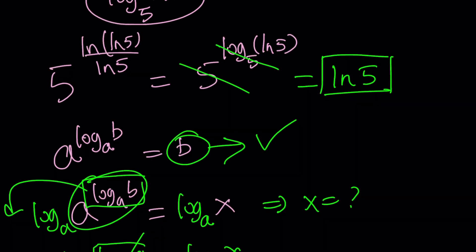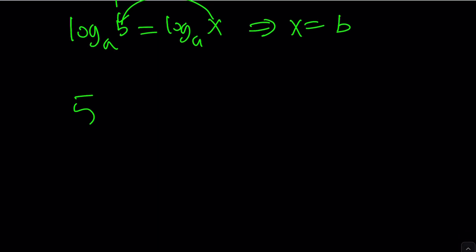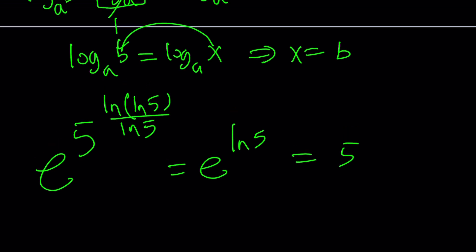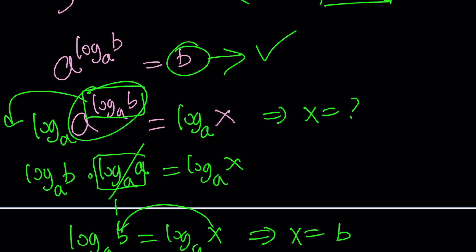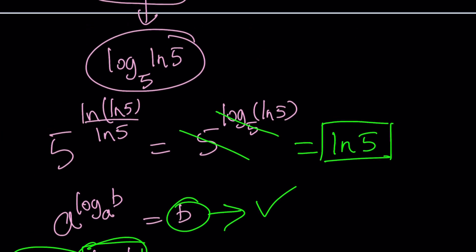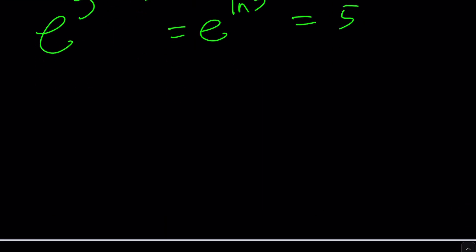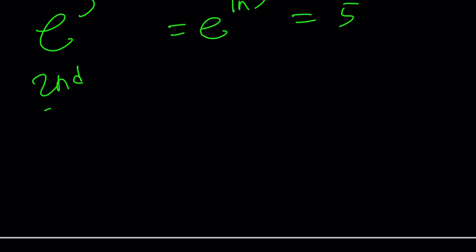Couldn't it be simpler? Yes. If you wrote this as e to the power 5 to the power ln(ln5) over ln5, then it will be e to the power ln 5, which is equal to 5. But that's not the case. Maybe we can do that problem in a separate video. But this is ln 5, and this is the first method. Let's see if there's an alternative method to this.